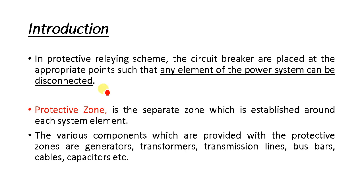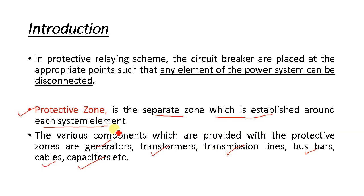Now, how is this protective zone identified and how do we place it? In our power system, many equipments are present and we have to switch circuit breakers on and off in case of maintenance work, usual operation, or repair. They also operate under abnormal conditions like short circuits. Our protective relaying should be provided around each element of our power system.